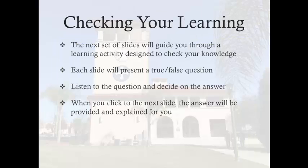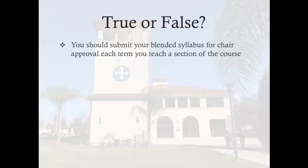The remaining portion of the module will give you the opportunity to process the information presented here and ensure your understanding. Each slide will present a true-false question and give you the opportunity to reflect prior to hearing the correct response and an explanation. True or false: You should submit your blended syllabus for chair approval each term you teach a section of the course. The correct answer is false. You will submit your blended syllabus for approval the first time you teach it. After that, you would need to submit for new approval only if you make significant changes to the blended syllabus.